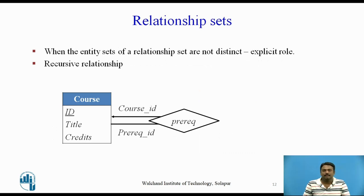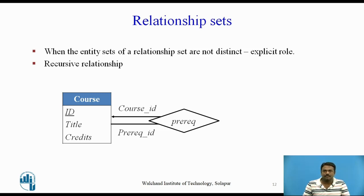When the entity sets of a relationship set are not distinct — that is, the same entity set participates in a relationship set more than once in different roles — this type of relationship set is sometimes called a recursive relationship set. Explicit role names are necessary to specify how an entity participates in a relationship instance.